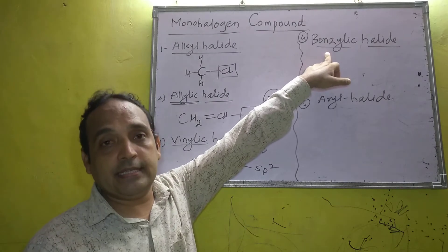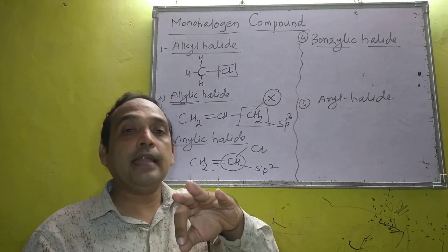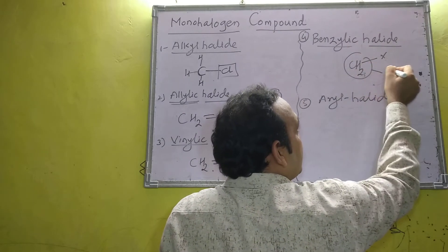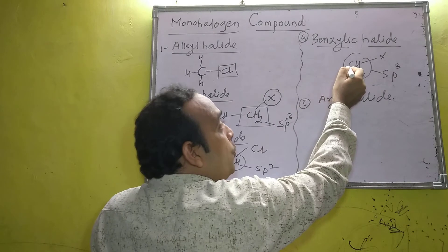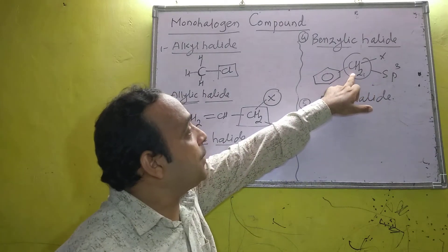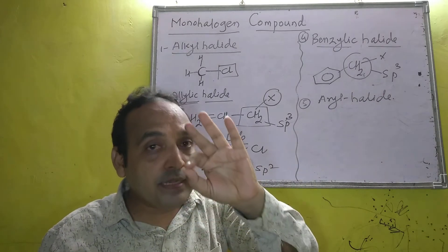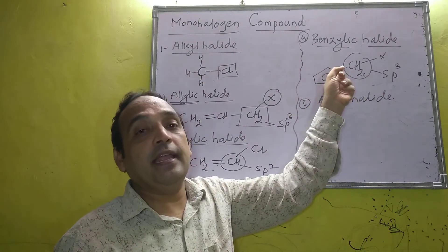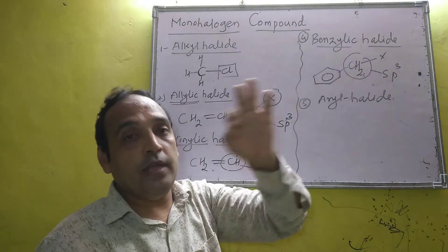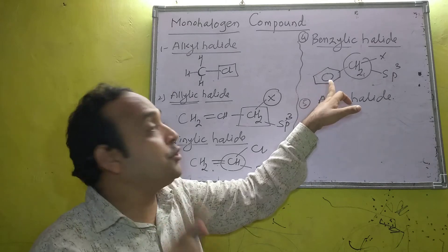In benzylic halides, the halogen atom is attached to an SP3 carbon which is further attached to an aromatic ring. This carbon is called the benzylic carbon. So in benzylic halides: halogen atom attached to SP3 carbon which is attached to the benzene ring.